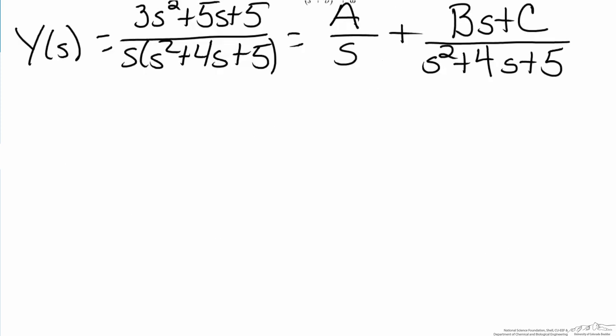To solve for A, B, and C, our focus will shift to the numerator. We'll now find a least common factor, and multiply the A by the s squared plus 4s plus 5, and the Bs plus C term by s, of which this must equal the numerator we already have, 3s squared plus 5s plus 5.